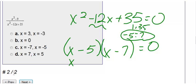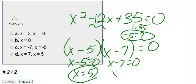Then I'm going to take each of these parentheses, and I'm going to set them equal to zero. Therefore, when I add 5 to the other side, I get positive 5. I add 7 to the other side, I get positive 7. So we get positive 5 and positive 7, which is choice D.